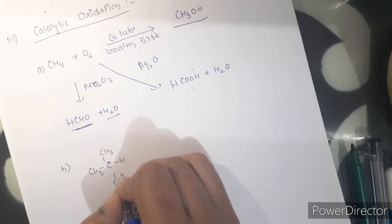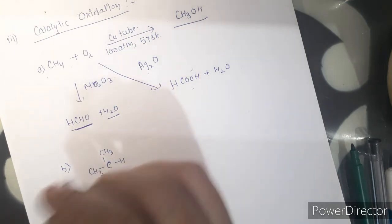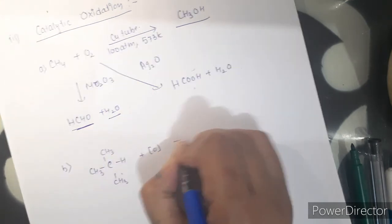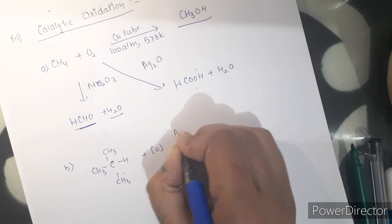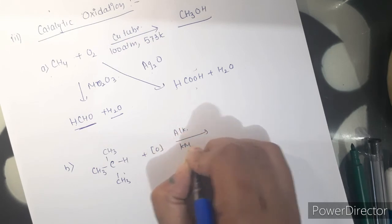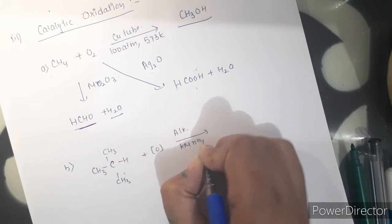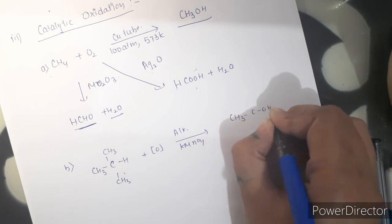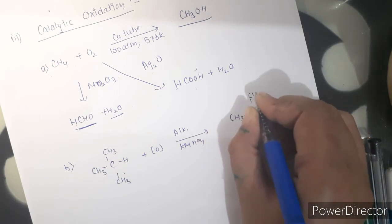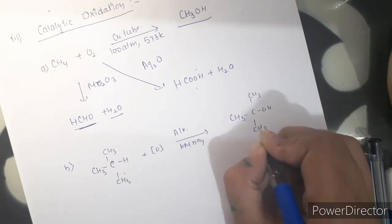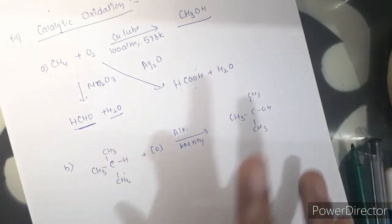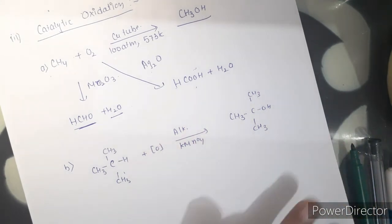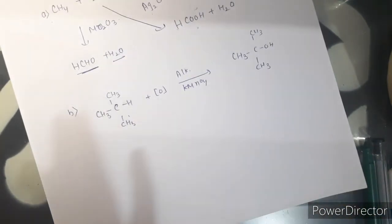Tertiary alkanes have high reactivity and generally undergo oxidation in the presence of alkaline KMnO4 to produce alcohol.